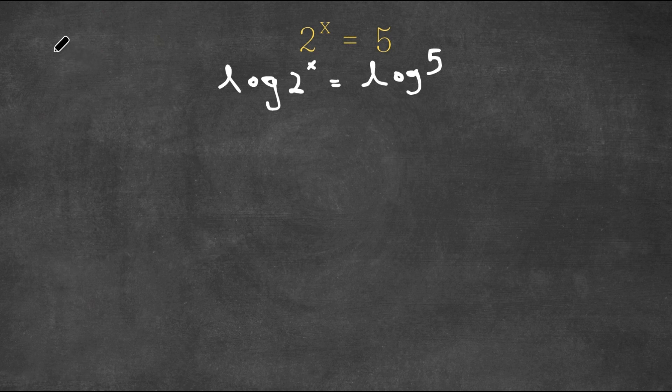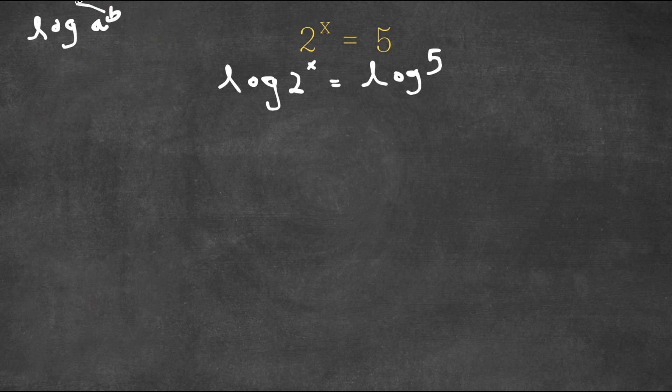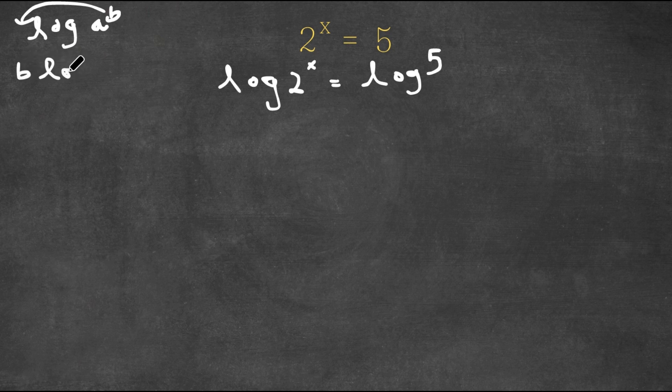Now an important property of logarithms is that if we have something in the form log a to the power of b, we can actually move this exponent b to the front of the logarithm. So this would be b times log a.